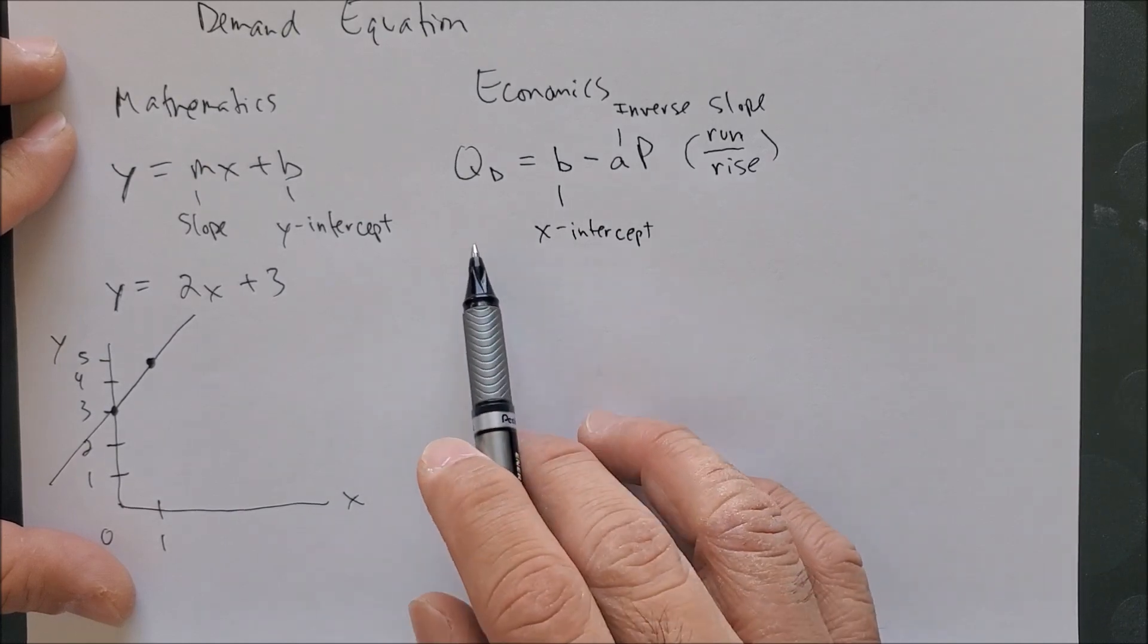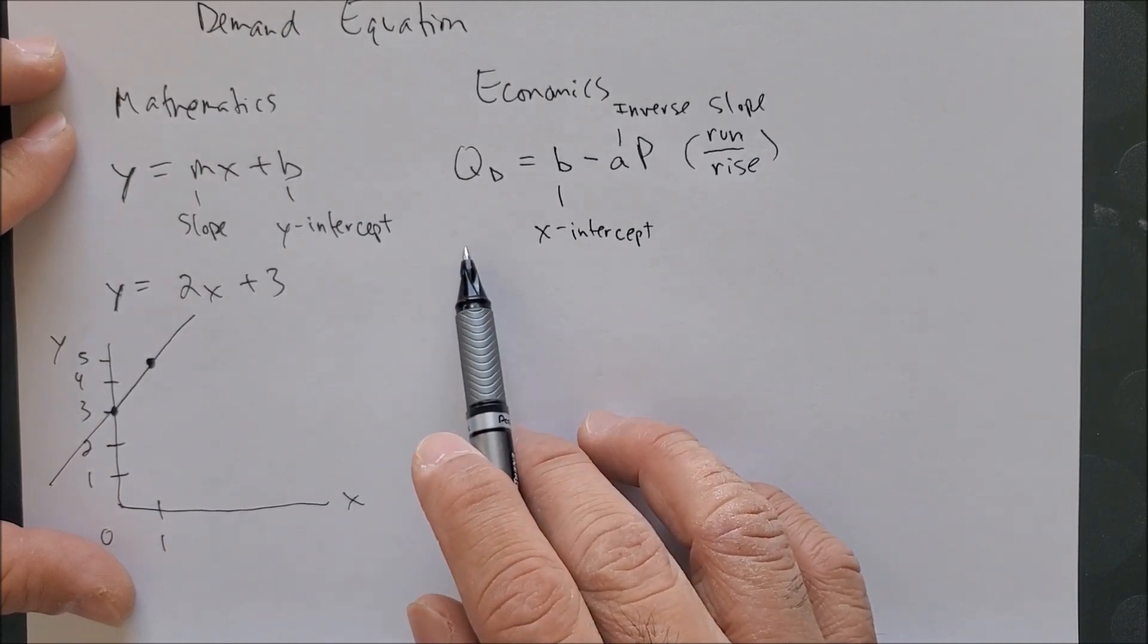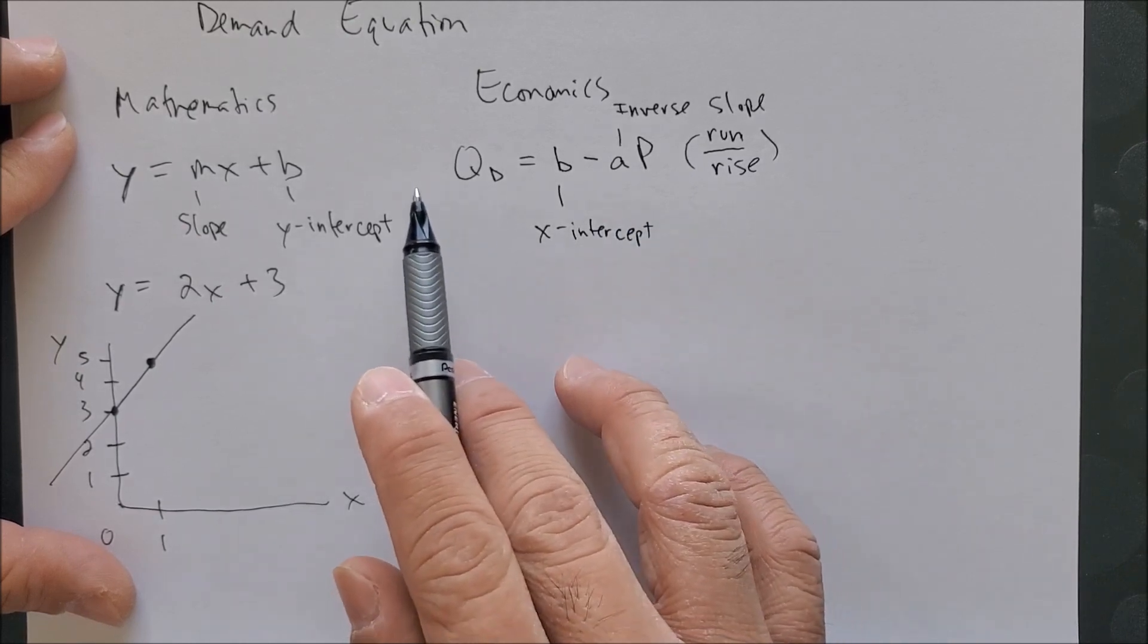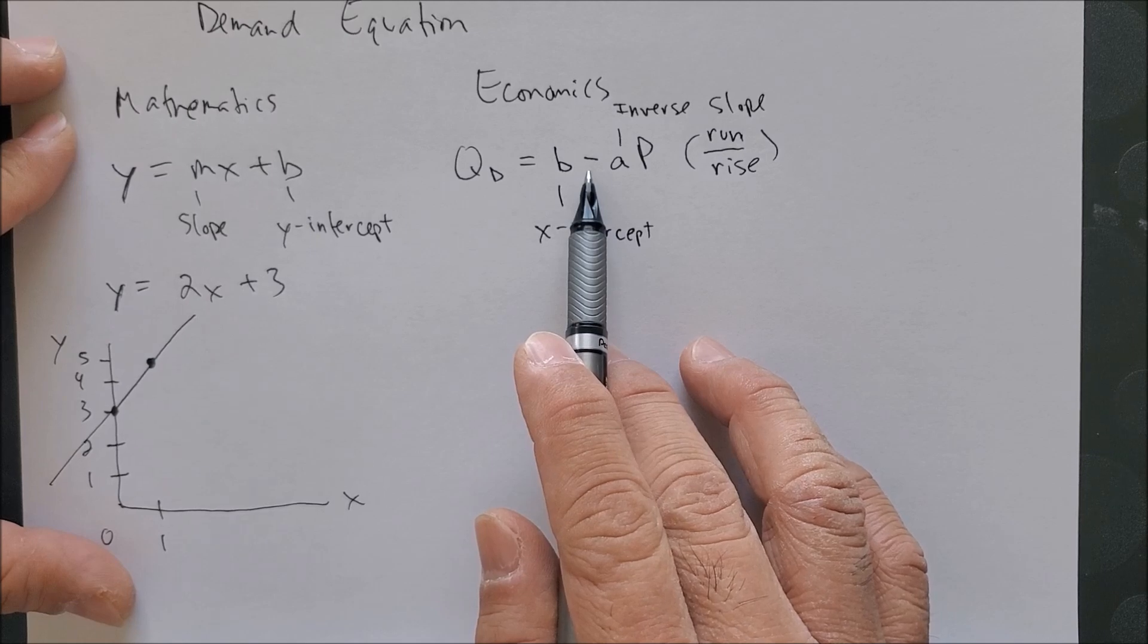Thirdly, I want you to focus on the relationship between quantity, demand, and price. We see that there is a negative sign.